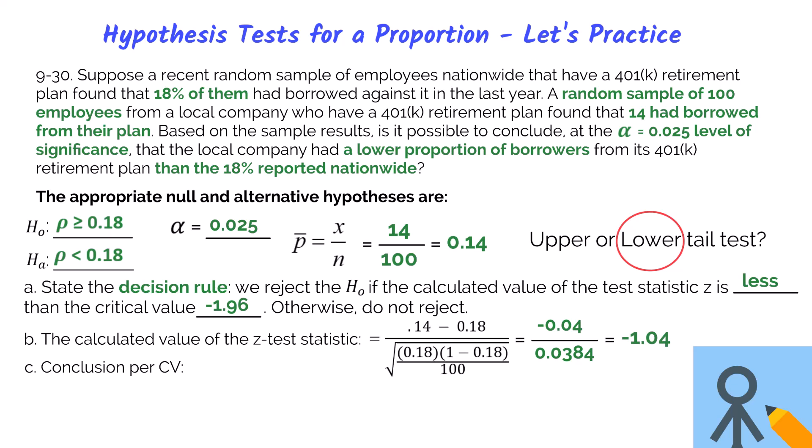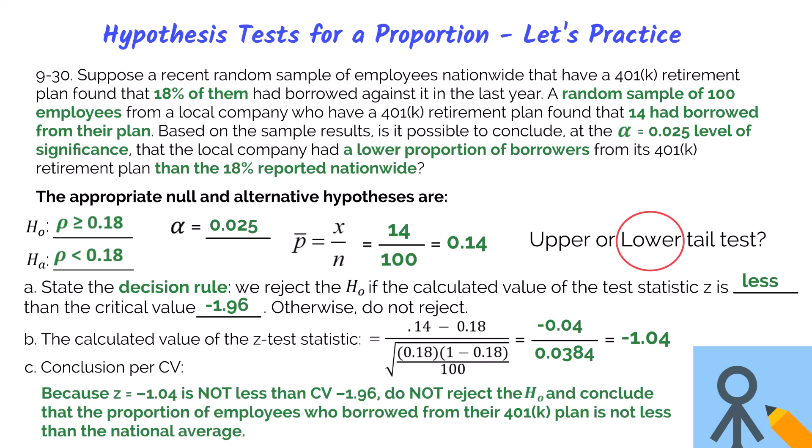I always recommend doing those calculations separately to avoid order of operations errors. Using the critical value approach, since the test statistic of negative 1.04 is not less than the critical value of negative 1.96 and does not fall in the rejection region, we do not reject the null and conclude that the proportion of employees who borrow from their 401k plan is not less than the national average.